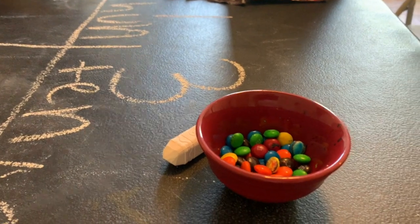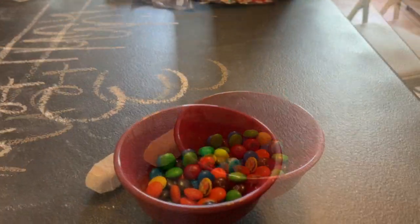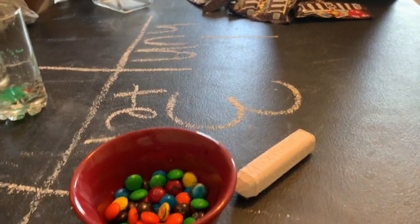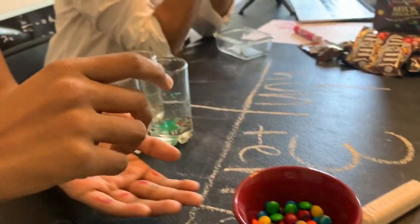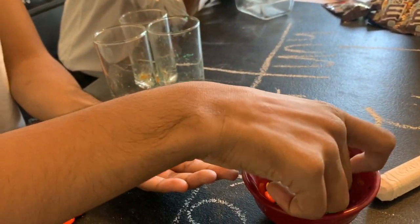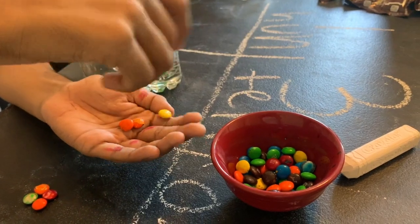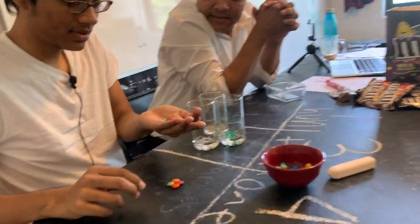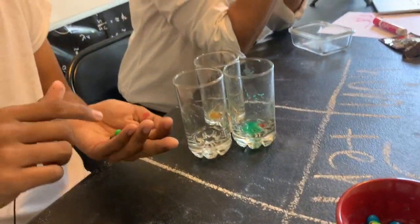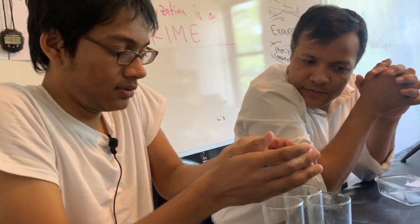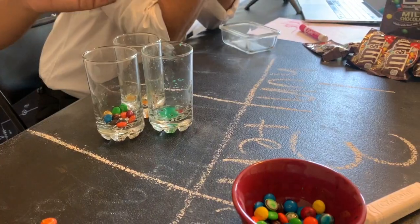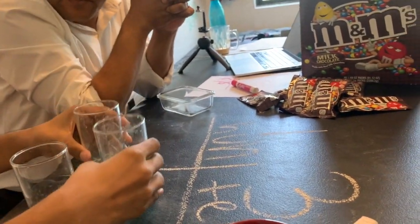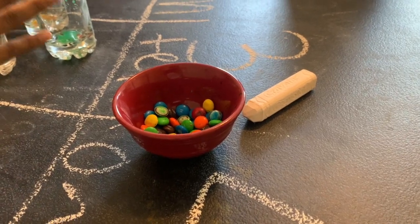Now show me 3 groups of 10. I know 1 glass can hold 10 maximum. So I'm going to get 10 candies: 1, 2, 3, 4, 5, 6, 9, 10. I have 10 candies, so I can put all of them in one box. That's one group of 10. How many more do you need? 2 more. So altogether you're going to have 3 groups of 10.